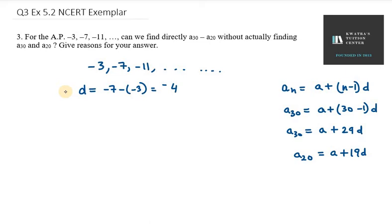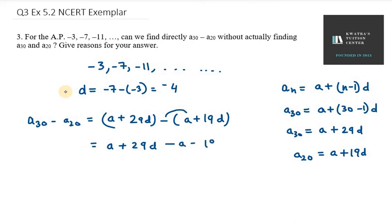So we need to find A30 minus A20. A30 can be written as A plus 29D minus A plus 19D. Let's solve this. We get A plus 29D. Expanding the brackets, we get minus A minus 19D.